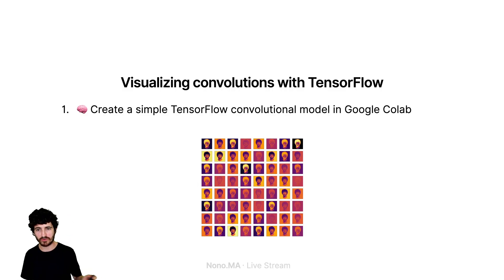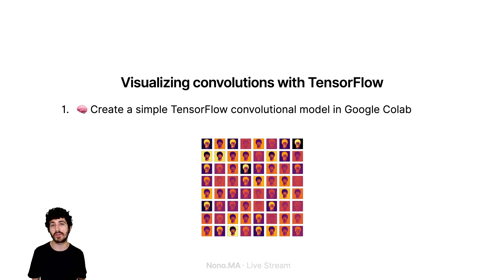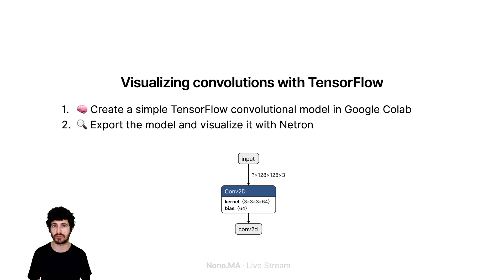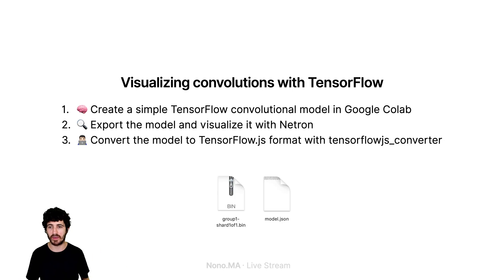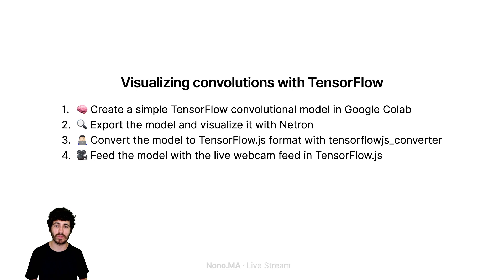We're going to create a simple model. The filters called inside of the convolution — we're going to have 64 filters with a three by three kernel size. That's going to generate something like this from every input image you feed through the model. We're going to export the model and visualize it with Netron. Netron is an Electron cross-platform application with a drag-and-drop interface. You drag and drop a model saved from Keras or TensorFlow and then you can visualize it as you can see here.